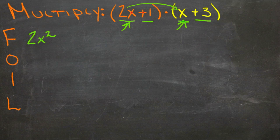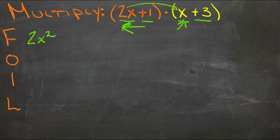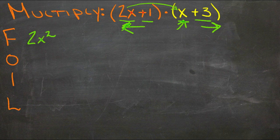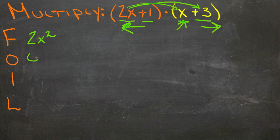Then we multiply the outer two terms. So we have the outside term, which is this one, and the outside term, which is this one. So we have 2x times 3 and that gives us 6x.